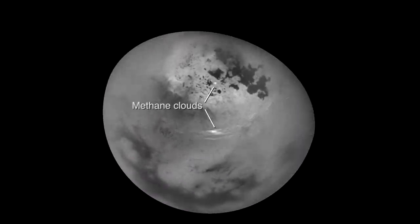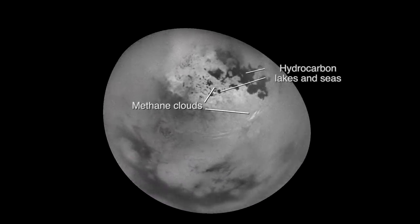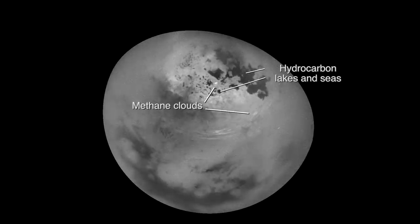Drifting below these exotic cloud formations are methane rain clouds that form in a remarkably similar way as clouds do on Earth.